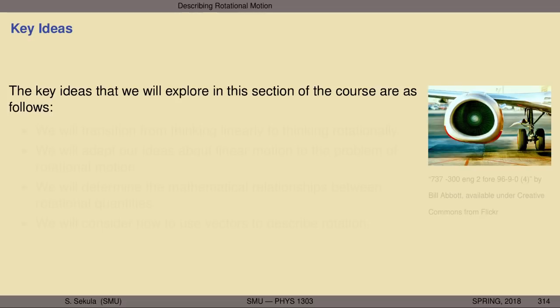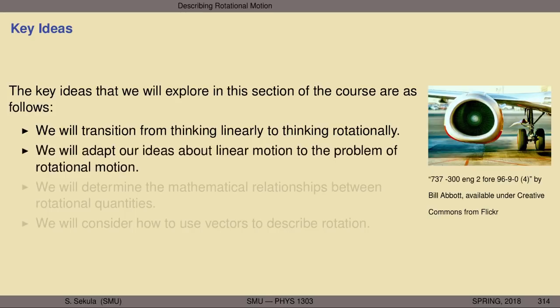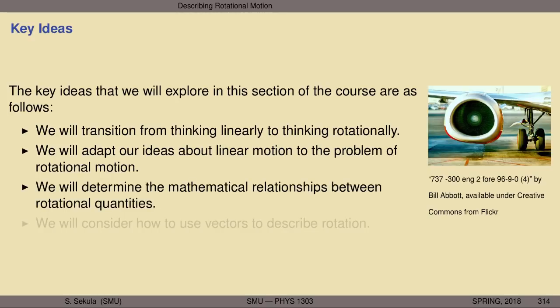The key ideas we will explore in this section of the course are as follows. We will transition from thinking linearly — about motion only along straight lines or combinations of straight lines — to thinking rotationally, and understand why these are not the same kind of motion. We will adapt our ideas about linear motion to rotational motion, reapplying our calculus toolkit and the language of displacements. We will determine the mathematical relationships between rotational quantities and consider how to use vectors to describe rotation.